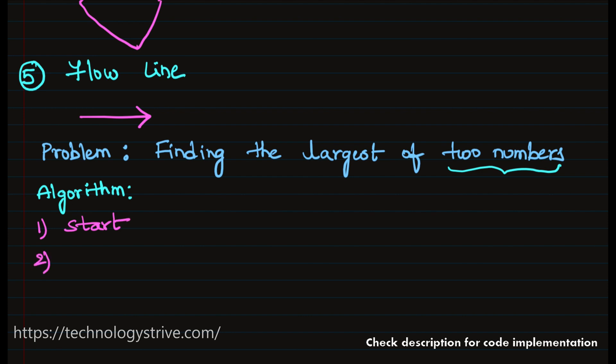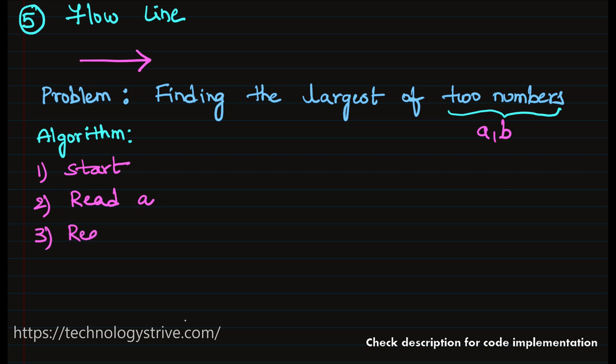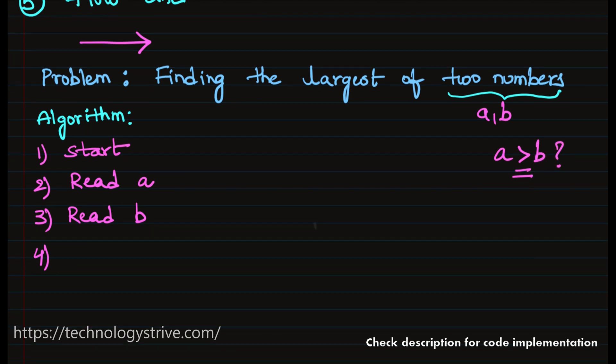And then second, do we have any input or not? Assume that the numbers are a and b. So we have to read a. And the third step, we have to read b also. Then what we have to do? Usually to find the largest, what is the operator we will use? Is a greater than b or not, right? This is the operator we are going to use.